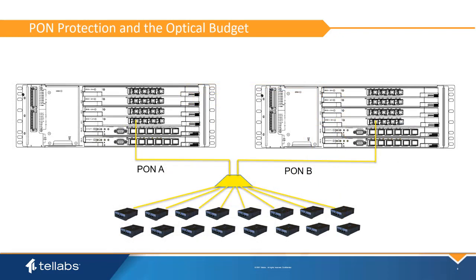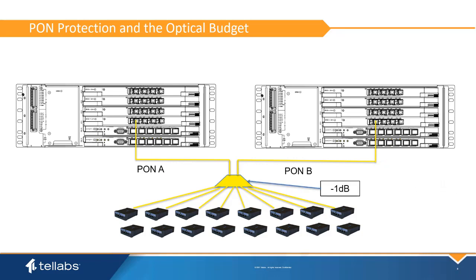There are two key points associated with the optical budget of a protected Pond network. First, the secondary Pond must have an optical level 5 dB lower than the primary Pond when using the QIU-7 card. This is done by placing an additional 5 dB of attenuation to the secondary Pond; this additional budget is not required when using the OIU-8. Second, Pond splitters with two OLT inputs can add up to 1 dB of loss to the optical budget versus splitters without a coupler. TELLABS recommends deploying two input splitters at most installations to allow Pond protection to be added at a future date if needed.